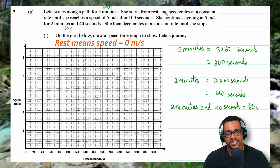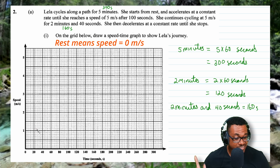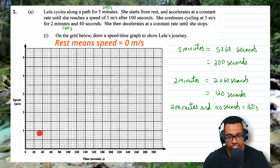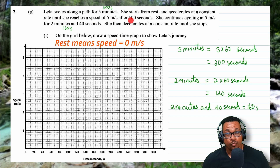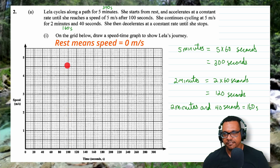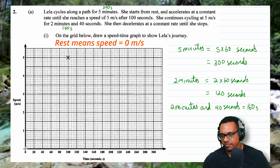She starts from rest and accelerates at a constant rate — in a speed-time graph, constant acceleration is a straight line, while a curve means changing acceleration. She reaches 5 meters per second after 100 seconds, so we plot the point at (100, 5) and draw a straight line from the origin up to that point.